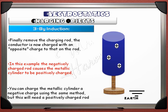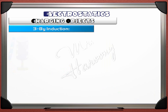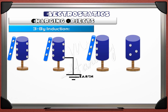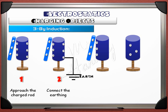We can summarize the steps of charging by induction in four steps: number one, approach the charged rod; number two, connect the earthing; number three, remove the earthing; number four, remove the rod.